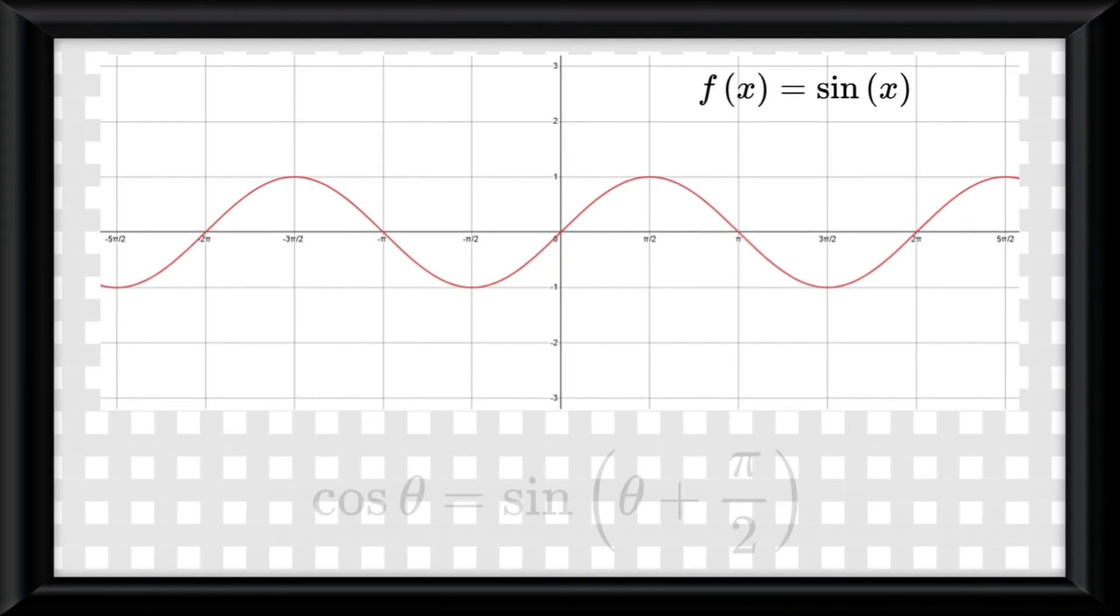First of all, as a review from my last video, cosine of theta equals sine of theta plus pi over 2.